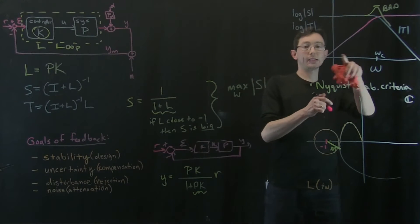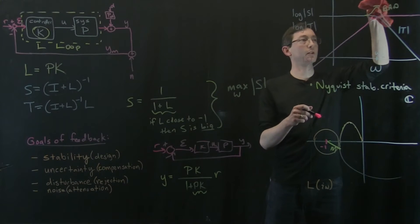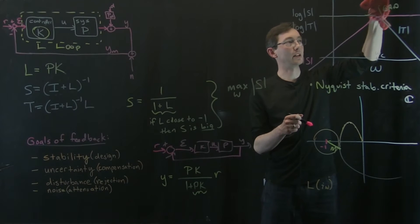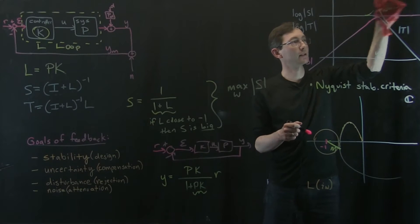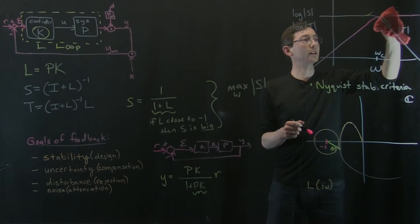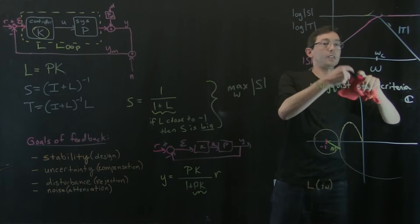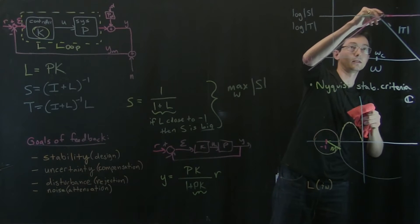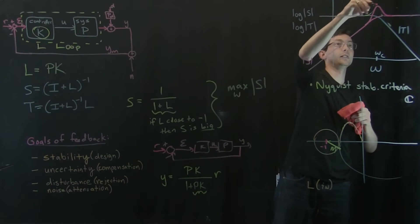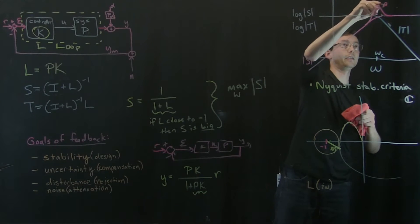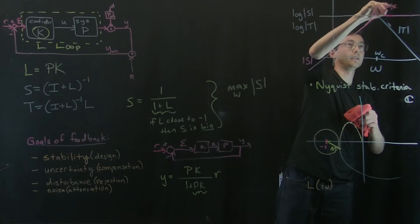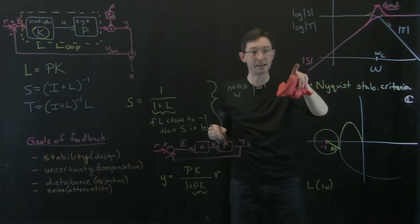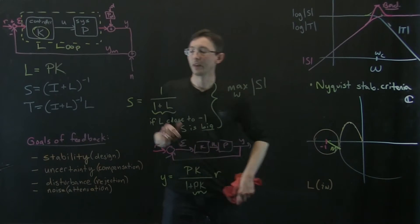Looking at this, I should have probably drawn this peak differently. I made it look like it was a peak in the complementary sensitivity, but it should really be a peak in the sensitivity that's bad. The peak in the sensitivity function is bad.